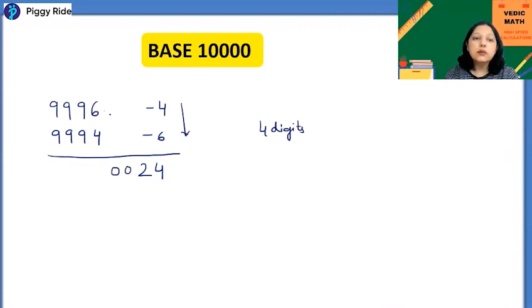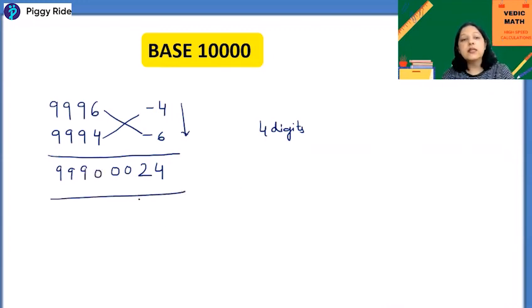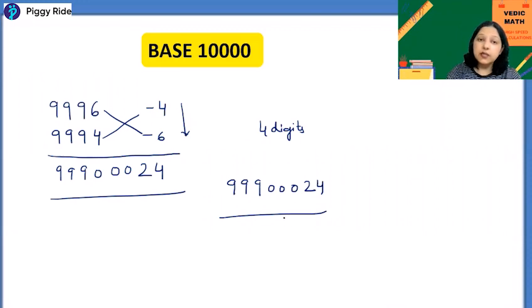And now cross addition: 9994 minus 6 will give you 9990. So our final answer is 99900024. So see, such a long multiplication we have done with the help of base multiplication and in few seconds only.